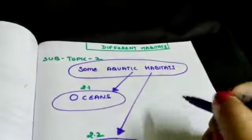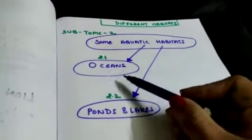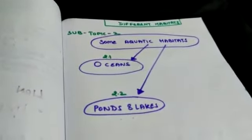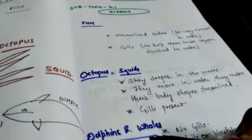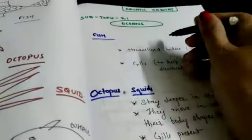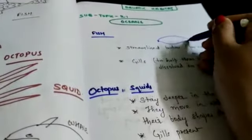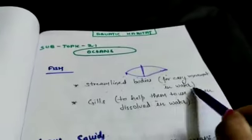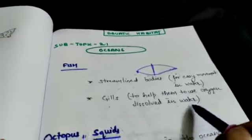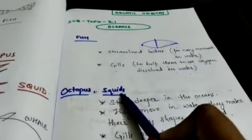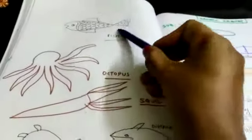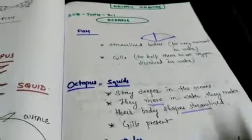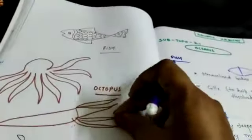Next we have subtopic number two, some aquatic habitats. In this section we have two: one is ocean, other is ponds and lakes. Here we have oceans with fish, octopus, squid, dolphins, and whales. Fish have streamlined bodies, starting is thinner, middle one is thick, so streamlined bodies for easy movement in water. Then about gills that help them to use oxygen dissolved in water. About octopus and squid, their body is not streamlined, but if they are moving then they make their body streamlined by collapsing.